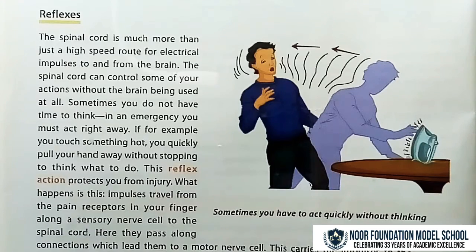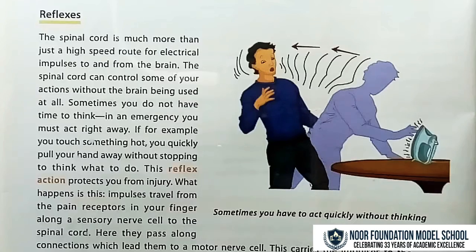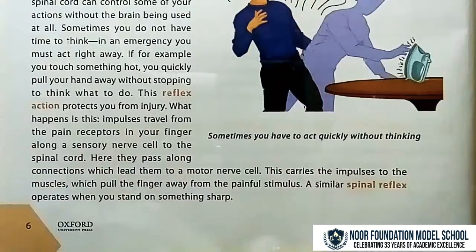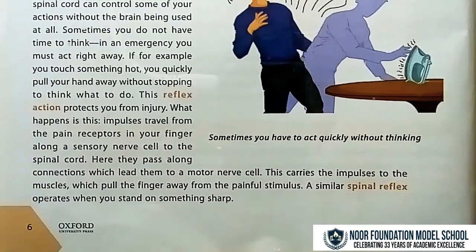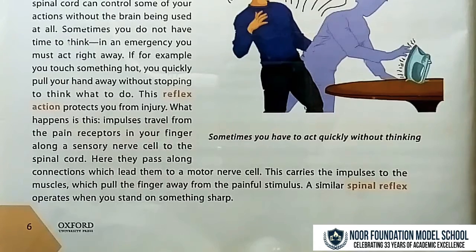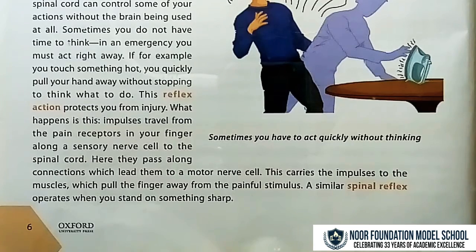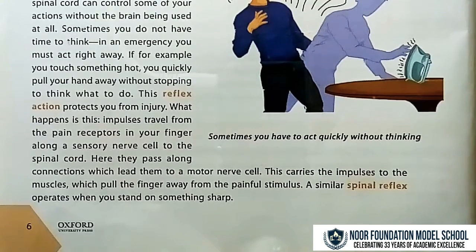Impulses travel from the pain receptors in your finger along a sensory nerve cell to the spinal cord. There they pass along connections which lead them to a motor nerve cell. This carries the impulses to the muscles which pull the finger away from the painful stimulus. A similar spinal reflex operates when you stand on something sharp.